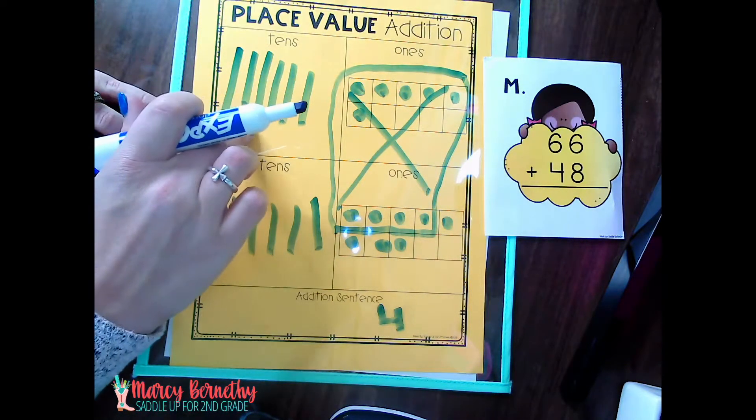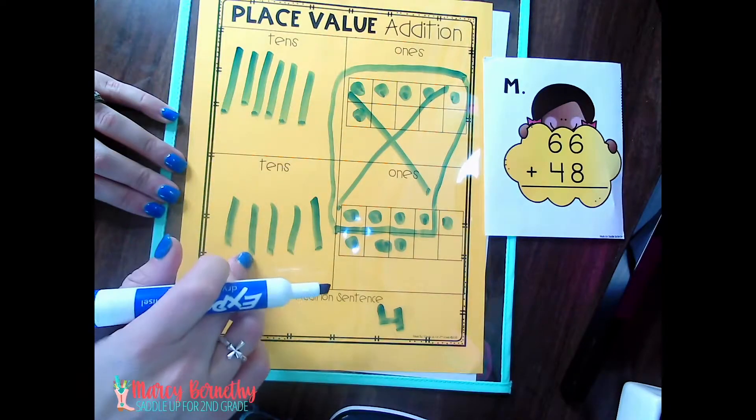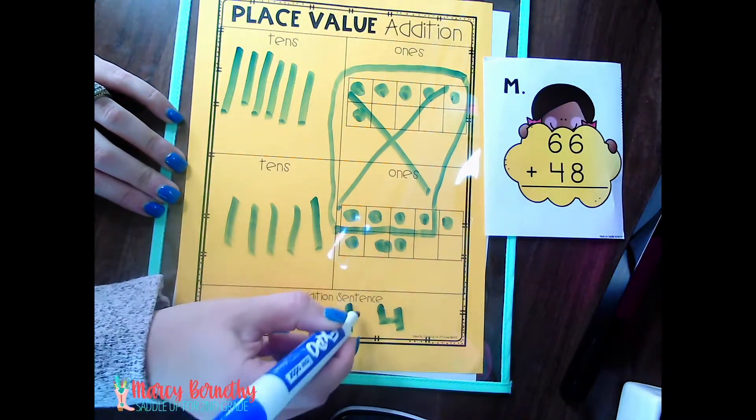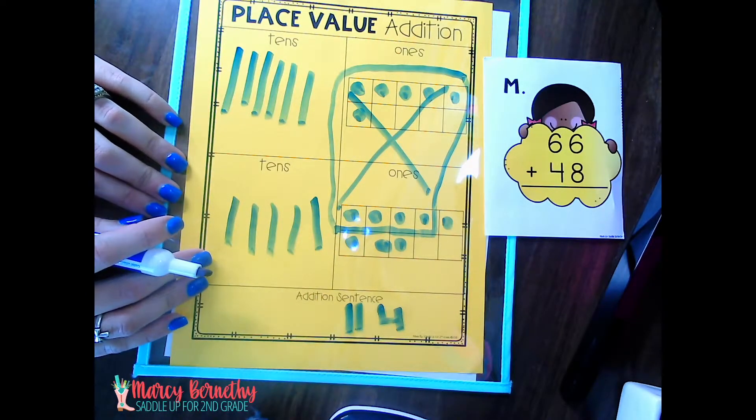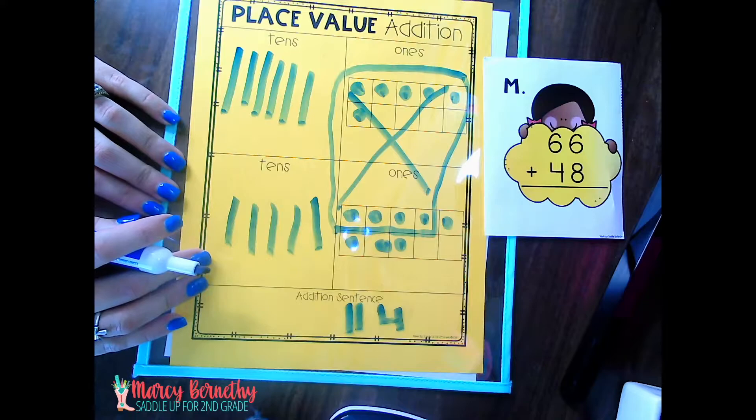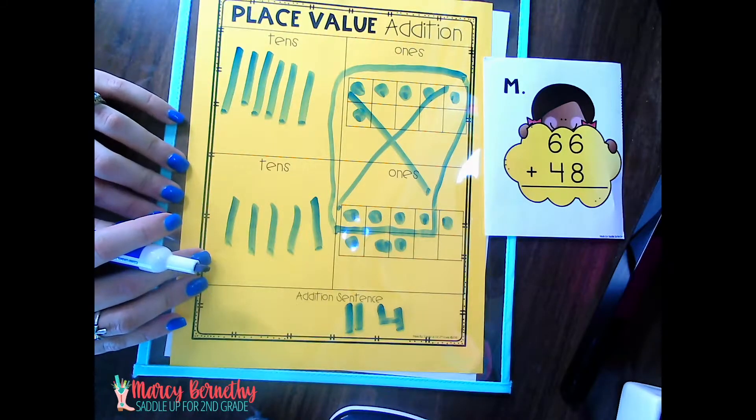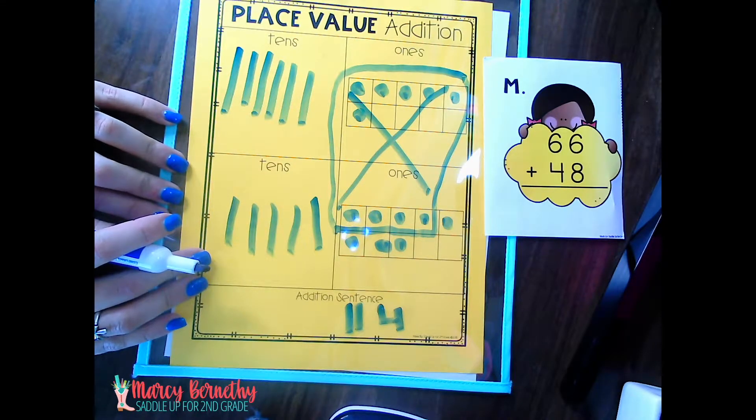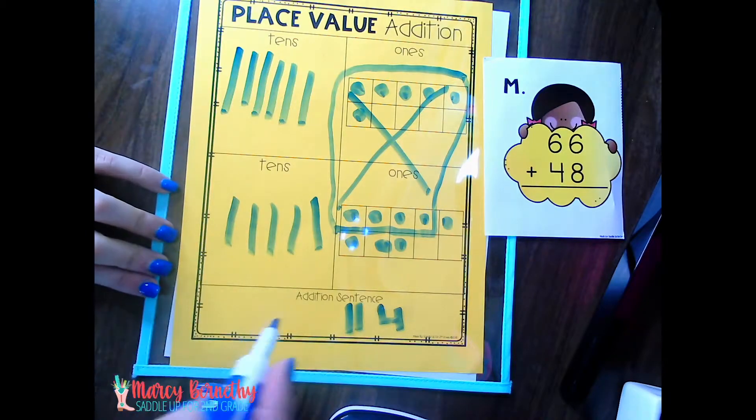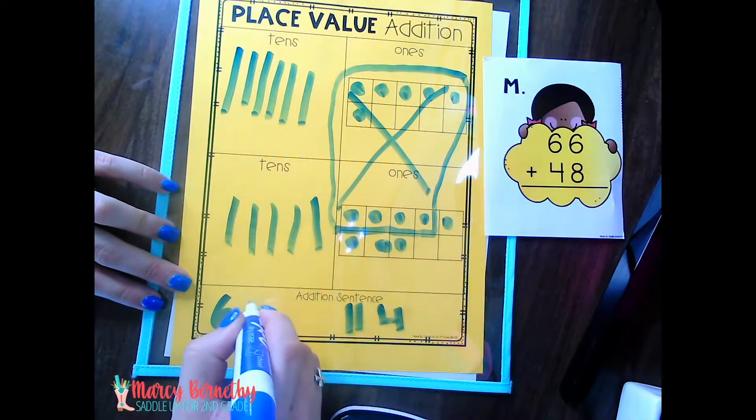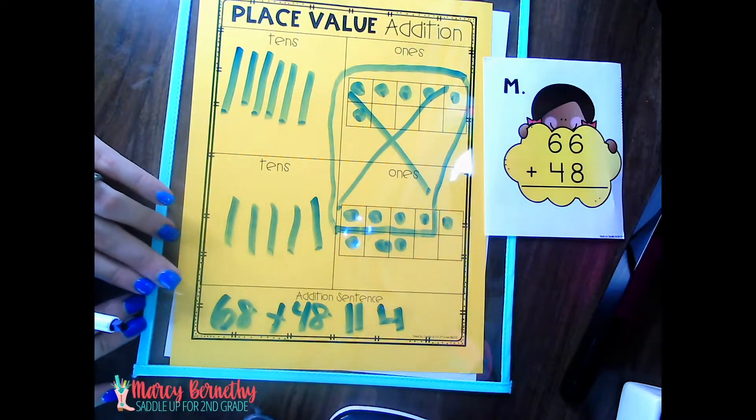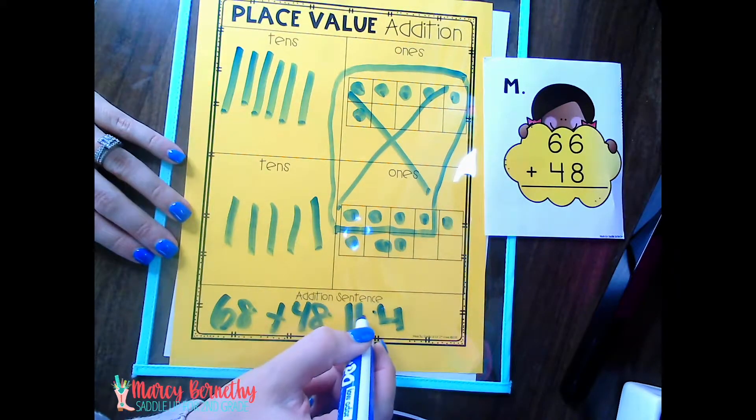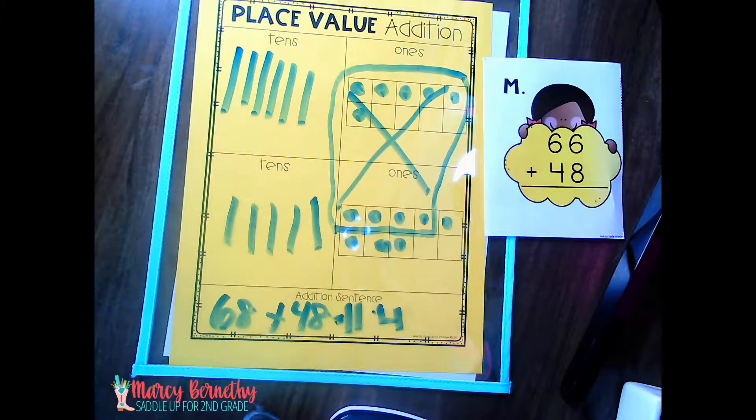One, two, three, four, five, six, seven, eight, nine, 10, 11. They have 11 tens and four ones. So their answer for 66 plus 48 is 114. And then down at the bottom, you could even have them write the full sentence. So that is how you model the base 10 strategy.